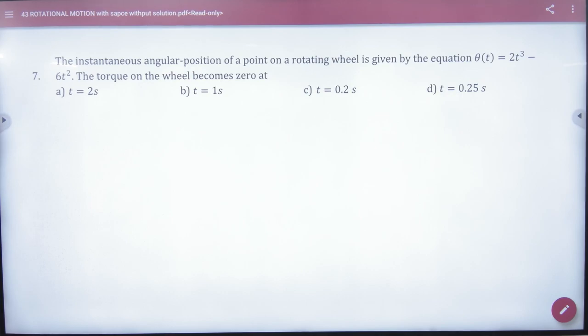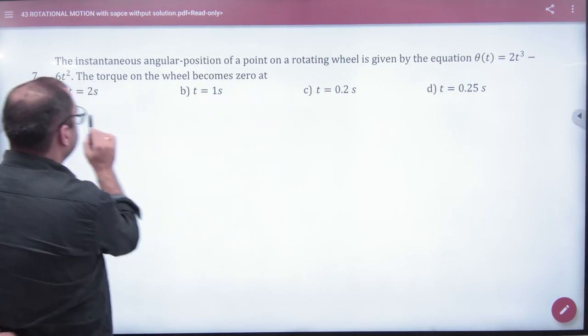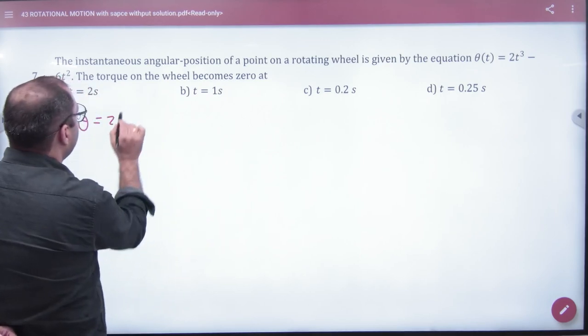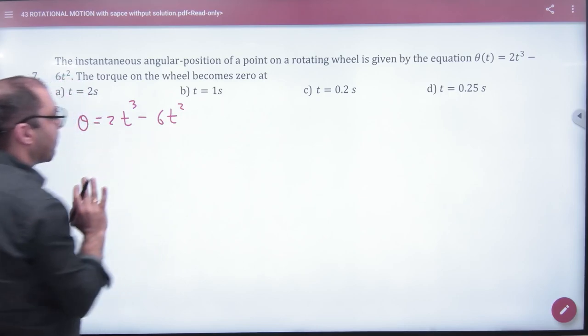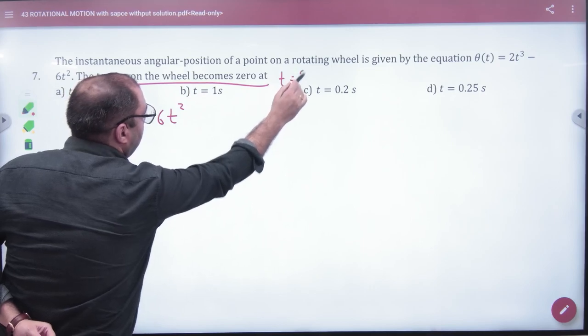Look, what's the logic? The instantaneous angular position of an object, theta. If theta is a function of time, time-dependent, then what will come? 2t³ - 6t². Torque becomes zero at time t. Torque becomes zero.